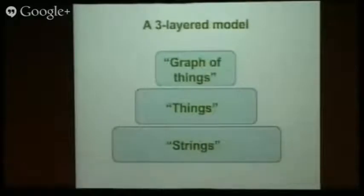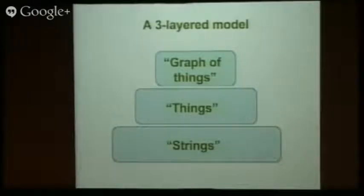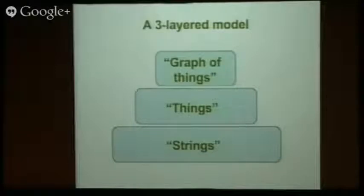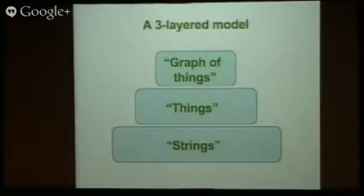We can show that as a three-layer model. At the very lowest level, we've got lexical entities or strings — any attempt at transcribing an entity. We can all spell things wrong, and those strings are full of mistakes, so they're not very useful things to work with. At the next layer up, we've got recognizable entities — a layer of things. Once we recognize those, we can assert relationships between them and build a graph of things.